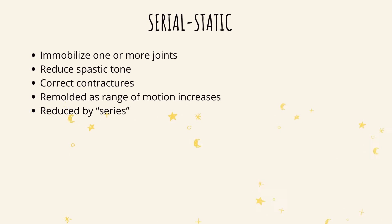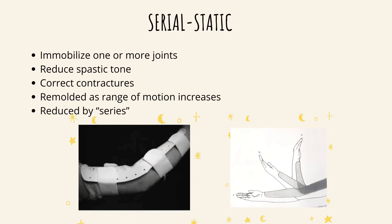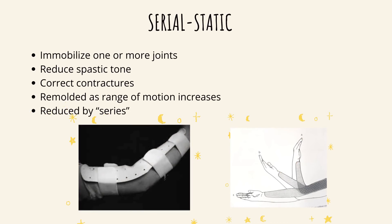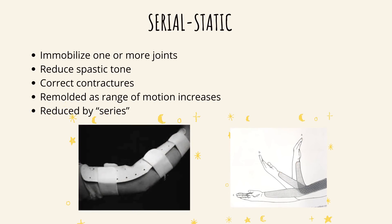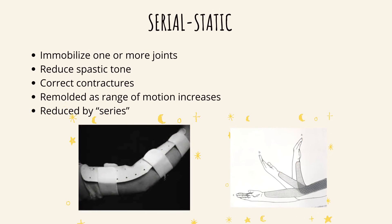The next category is the serial static orthosis. Same as the static orthosis, it also immobilizes one or more joints and reduces plasticity and corrects contractures. The difference is that this type of orthosis is remolded as the range of motion increases — it is adjusted by series. A perfect example is the anterior serial static elbow corrective extension orthosis, wherein the orthosis is adjusted towards elbow extension until the flexion contracture is completely resolved.